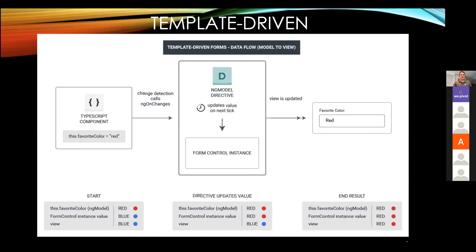Just to showcase the reverse side of things, where the component gets updated and changes the color to red — when the ngModel sees that it gets changed, it will fire a detection call to the directive or the form control, and from the form control it pushes that data via a view update to the template. This is how the two-way binding works with template-driven forms.